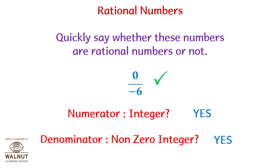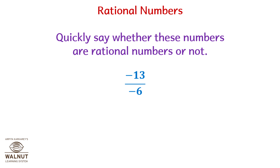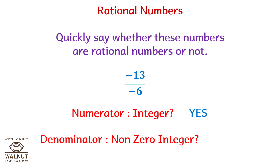Zero upon minus six again: numerator is an integer? Yes. Denominator is a non-zero integer? Yes. So it is a rational number. Minus thirteen upon minus six: is the numerator an integer? Yes. Is the denominator a non-zero integer? Yes. So of course it is a rational number.